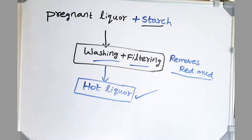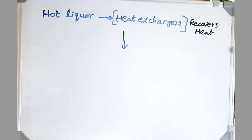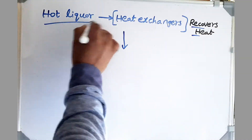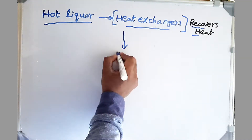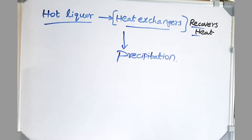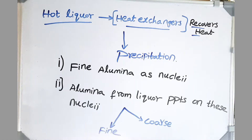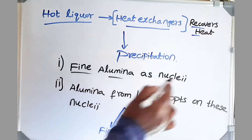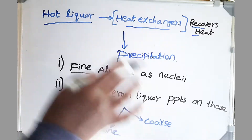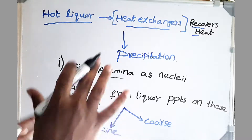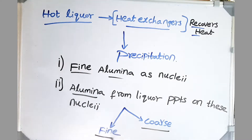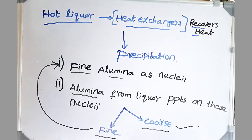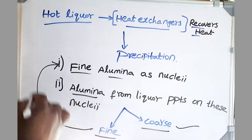After settling the red mud, we wash and filter, which removes the red mud. Now we have hot liquor consisting of our alumina and NaOH. We recover heat by passing the hot liquor through heat exchangers. Then we go to the process called precipitation, where we precipitate our alumina by providing nuclei on which further alumina can grow. We add fine alumina particles as nuclei, so alumina from our liquor precipitates and grows on them. After completion of precipitation, we separate coarse and fine particles. The coarse particles are taken as product and the fine particles are again used as nuclei for the next batch.